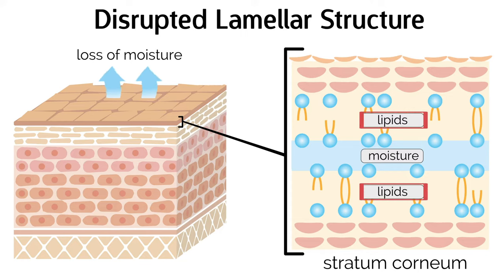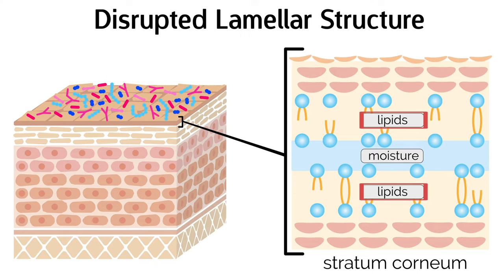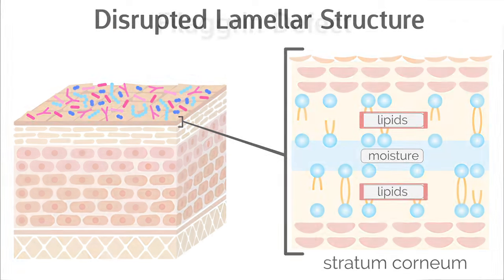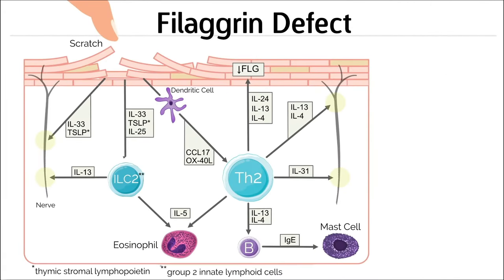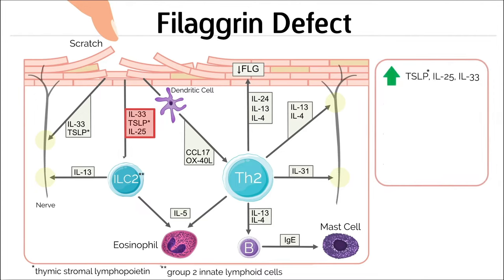All these factors result in dry skin and an environment conducive to microbial growth. Filagrin defects also result in the release of epithelial cell-derived cytokines, including thymic stromal lymphopoietin (TSLP), IL-25, and IL-33.